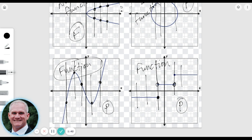I hope this helps you understand how we can use the vertical line test to determine whether or not a relation is a function.